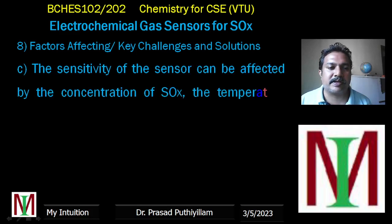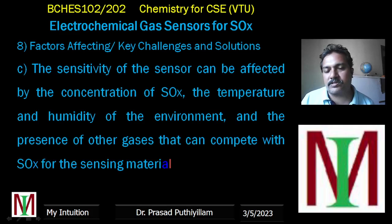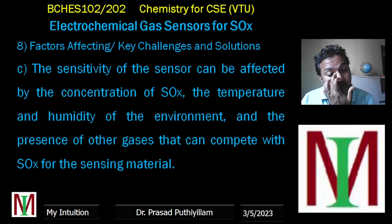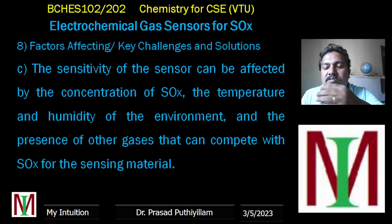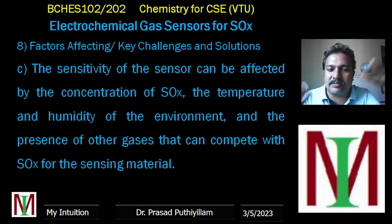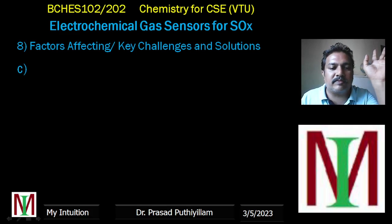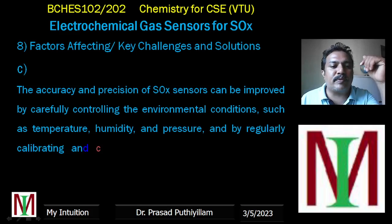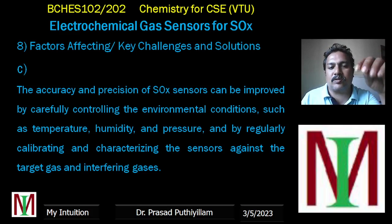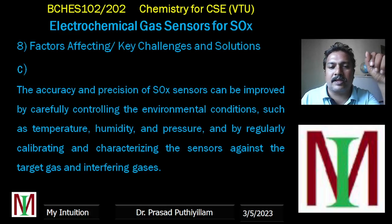The sensitivity of the sensor can be affected by the concentration of SOX, the temperature and humidity of the environment, and the presence of other gases that compete with SOX for the sensing surface — meaning other gases like oxygen or carbon dioxide may reach the sensing material first, preventing an accurate reading. The accuracy and precision of the sensor can be improved by carefully monitoring environmental conditions such as temperature, humidity, and pressure, and by regularly calibrating and characterizing the sensors against both the target gas and interfering gases.